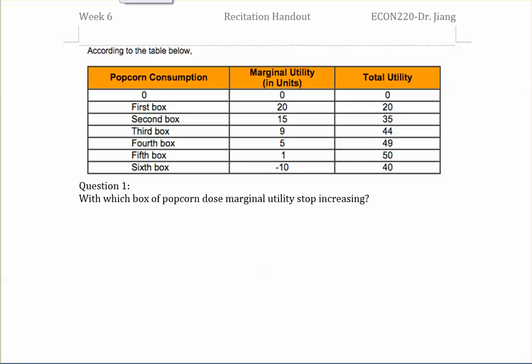This week's recitation, we will talk about the consumer's choice. The first question is related to the marginal utility. By learning this chapter, you need to know the relationship between the total utility and the marginal utility.